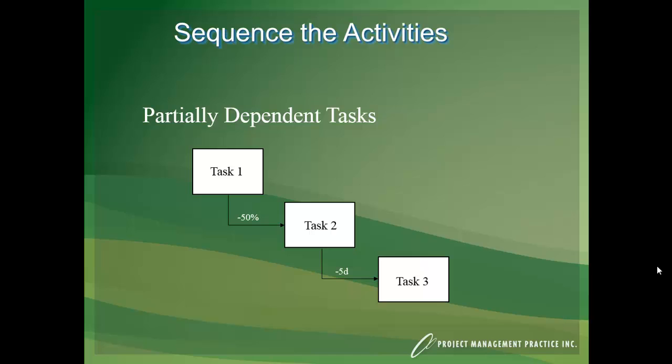So task 2 to task 3, we have a finish to start relationship within minus 5 days. And what that means is finish, when you finish task 2, you can start task 3, but pull it back 5 days. So you get this overlapping scenario in Microsoft Project in your network. So let's go take a look.